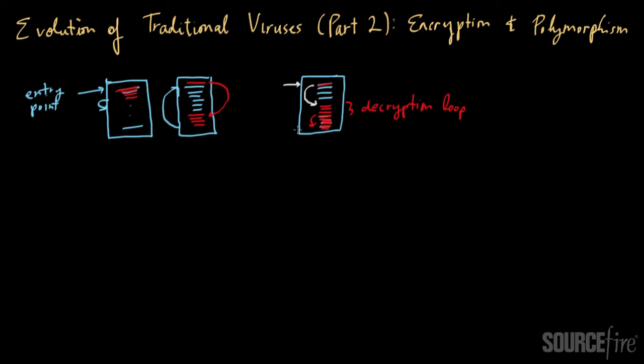And as before, once that part of the virus has been executed, control gets passed back to the main body of the program. Now what's interesting here is that you can't really see the core contents of the virus until the actual code is being executed. You can't see it ahead of time.